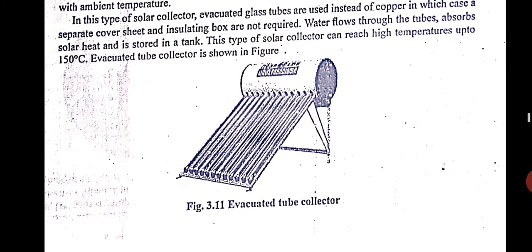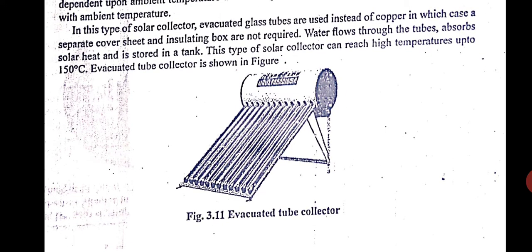In this type of solar collector, evacuated tubes are used instead of copper tubes. In this case a top glass cover is not required and also the insulation box is also not required. Water flows through the tubes, absorbs solar heat, and is stored in the tank. This movement of water is through gravity and thermosiphon effect only - there is no pump here.